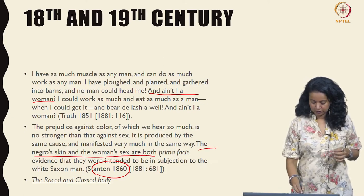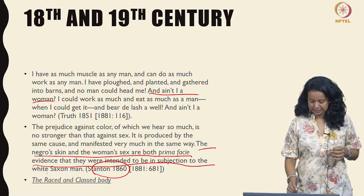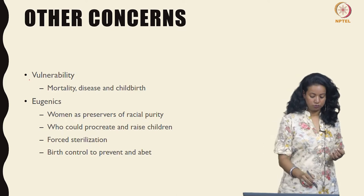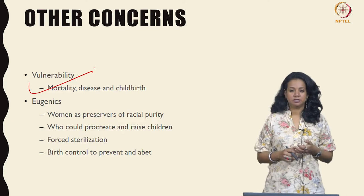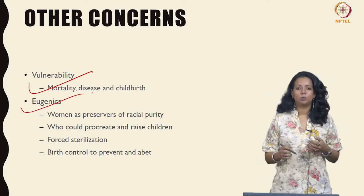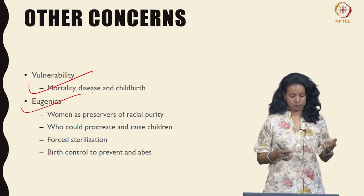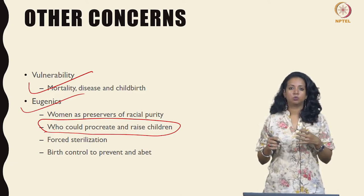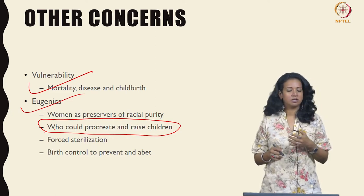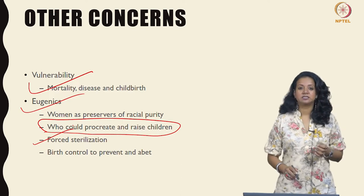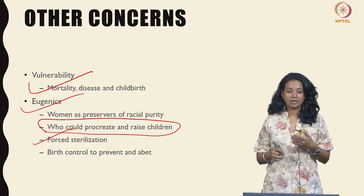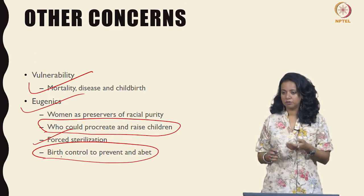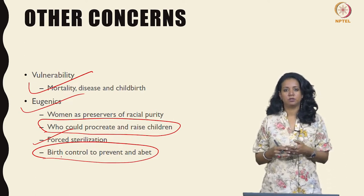We will not talk here about the race-blindness of this kind of declaration, but analyze it for what it is — the understanding that femaleness is an embodied trait. She goes on to say, 'the negro skin and the woman's sex are both prima facie evidence that they were intended to be in subjection to the white Saxon man.' Other concerns during this time for women's bodies included vulnerability in relation to mortality rates, disease, childbirth, and eugenics — a discourse was in circulation that women were preservers of racial purity. There were many instances of forced sterilization, and birth control to prevent or abet reproduction was subject to intense debate as to who had access to it in the first place.